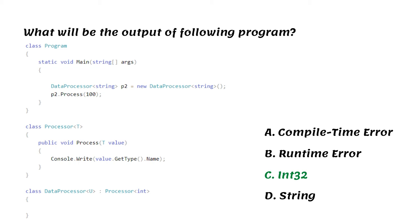However, the process method cannot accept value other than integer, because class data processor derives generic class processor, and the type is specified as int.